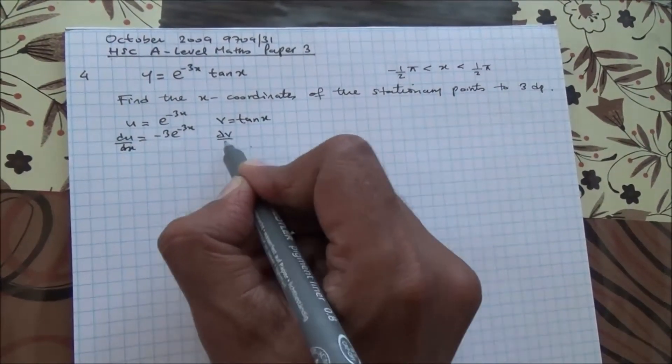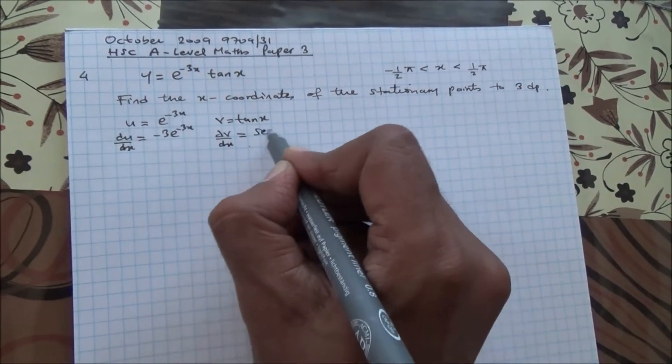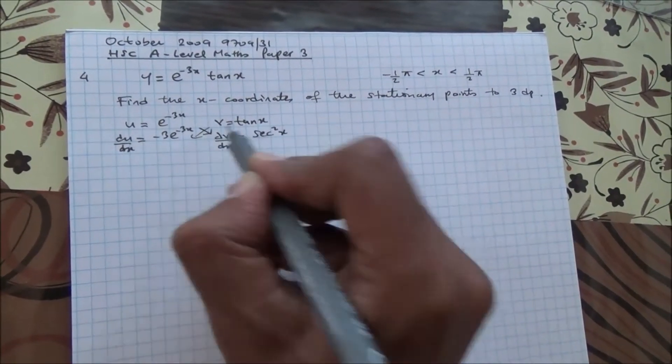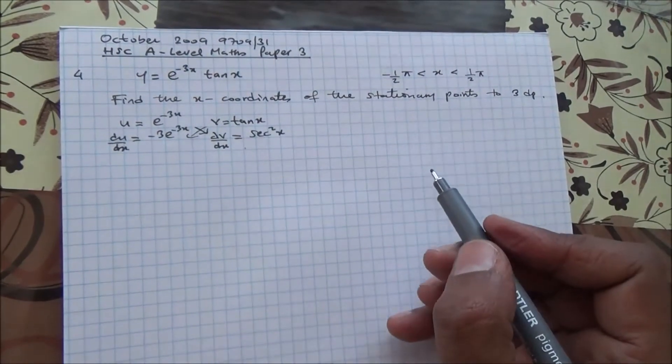And therefore, dv by dx is going to be sec squared x. v du by dx plus u dv by dx is equal to dy by dx. This is product rule.